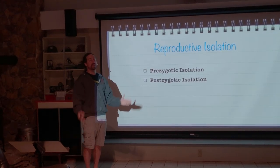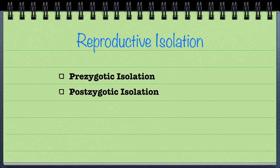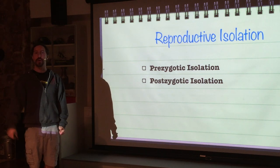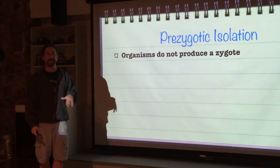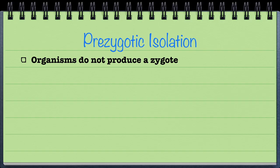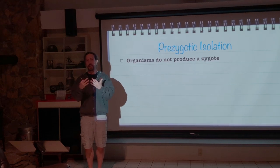Reproductive isolation either happens prezygotically or postzygotically. In other words, it happens either before you form a zygote or after a zygote is formed. Prezygotic isolation means that a zygote is not going to be formed by these different populations — these different groupings of organisms cannot or will not produce a zygote.